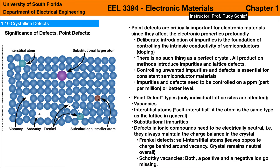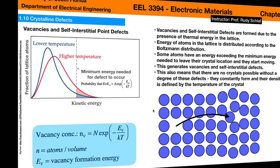In ionic crystals we have Schottky and Frenkel defects, which essentially keep the crystal neutral. In the Schottky case, a positive and a negative ion go missing to create a larger vacancy. In a Frenkel defect, one ion leaves to go elsewhere in the crystal, forming local charge imbalances, but overall the crystal remains neutral because negative and positive charges still balance each other.